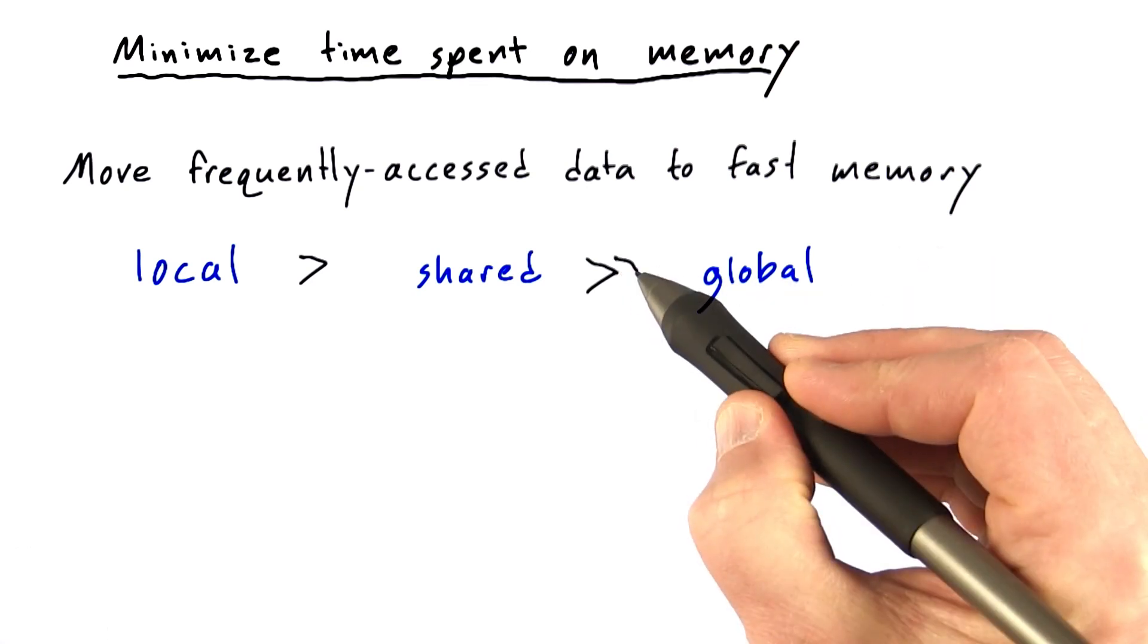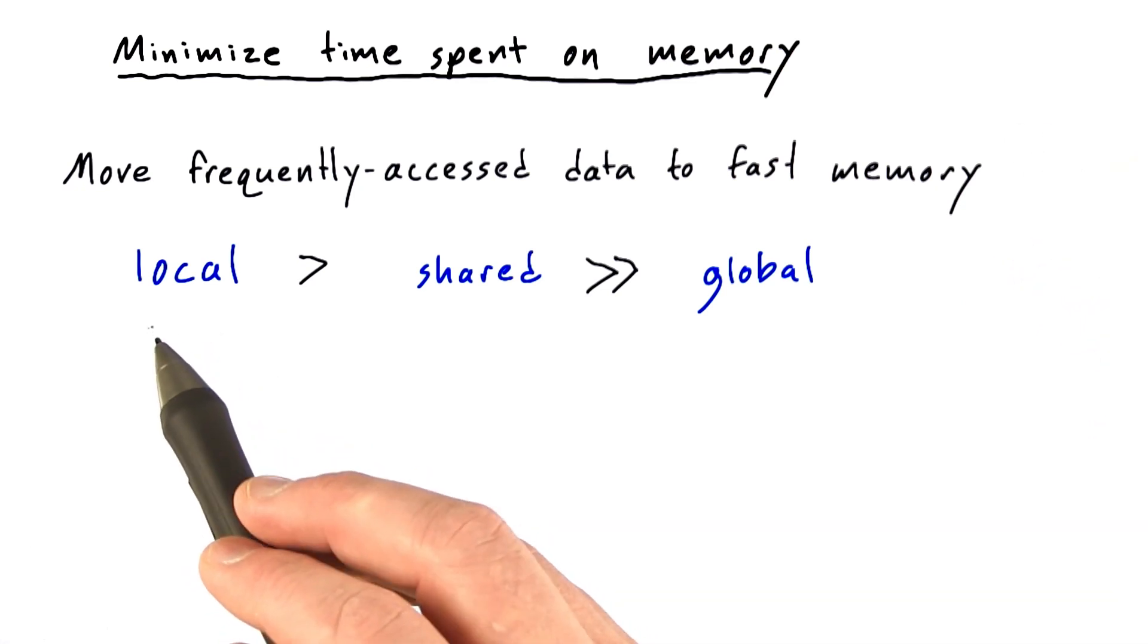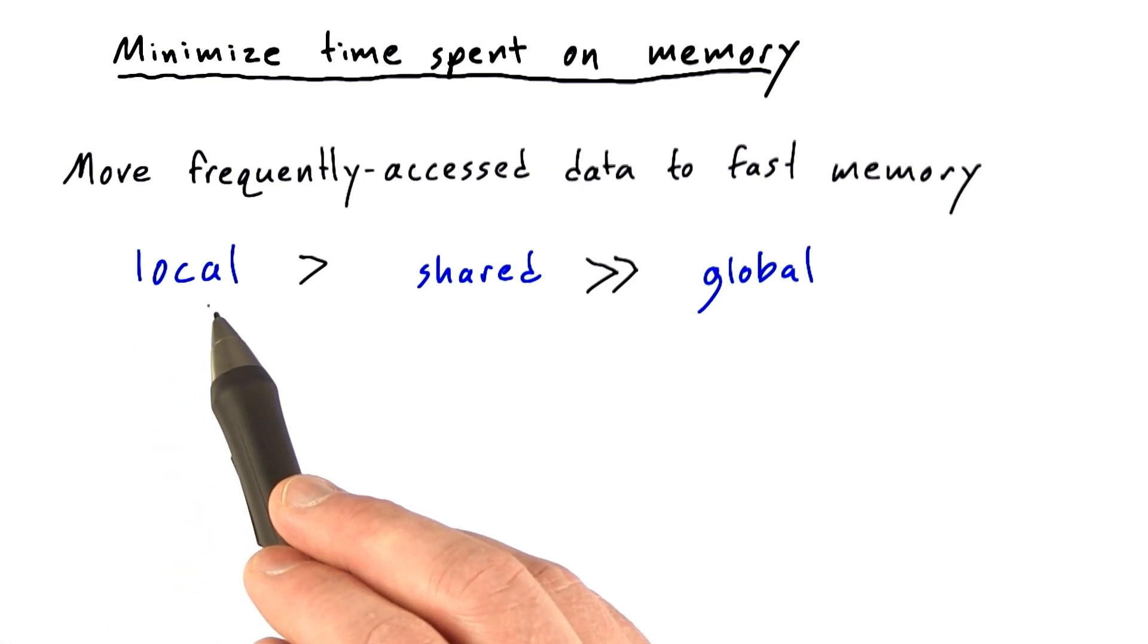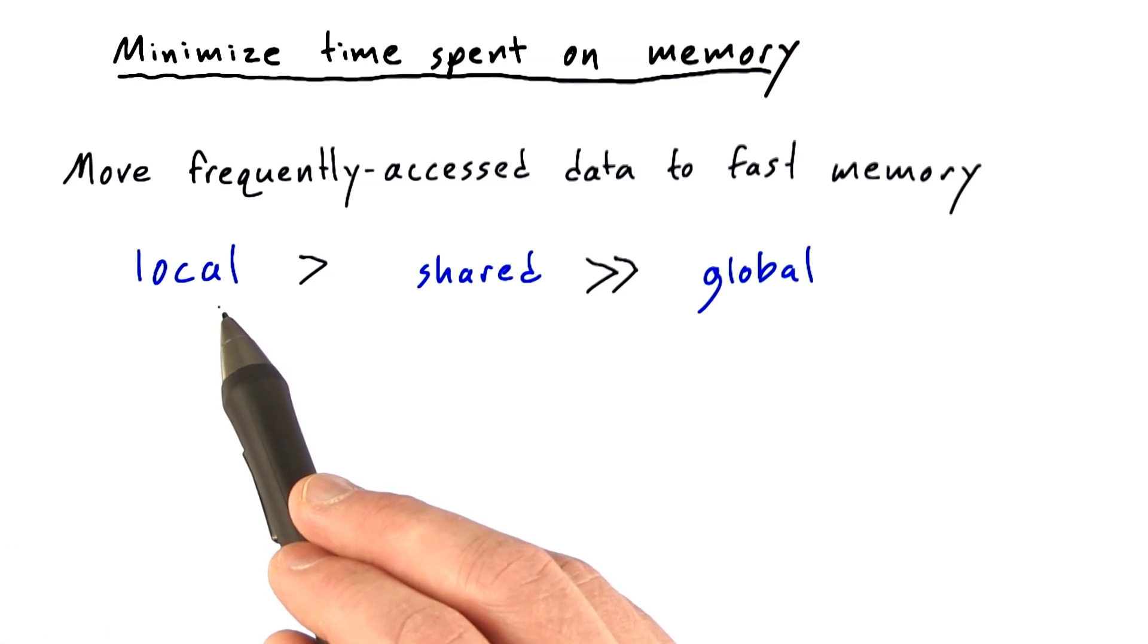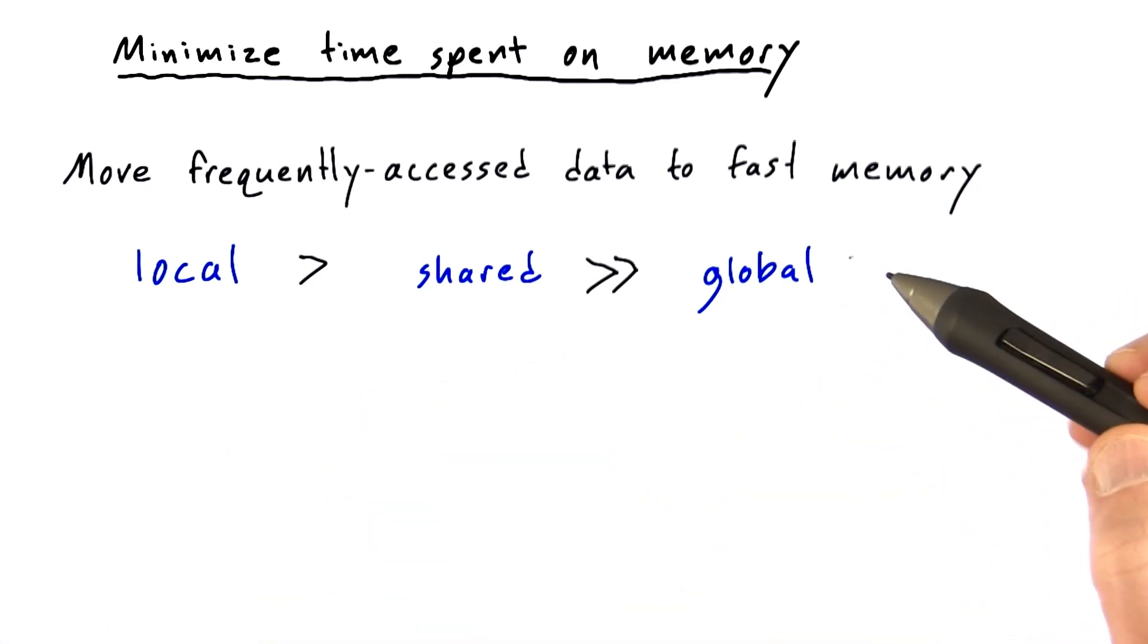In fact, shared memory and local memory are usually much faster than global memory. I should mention that there are subtleties here. For those of you who know something about computer organization, the reason why I'm labeling local memory as so fast is that it tends to live either in registers or in L1 cache, and those are both quite fast. This isn't a hard and fast rule. There are some subtleties here.